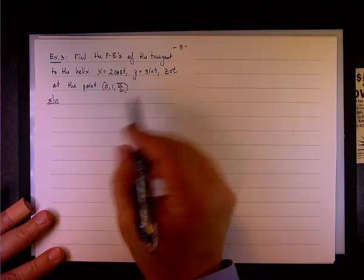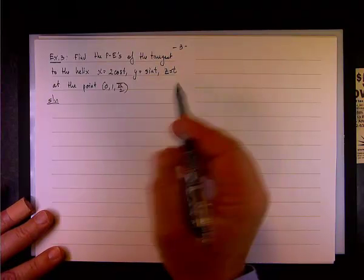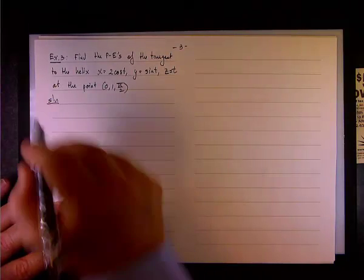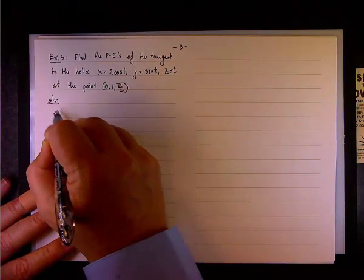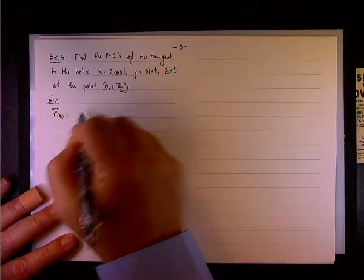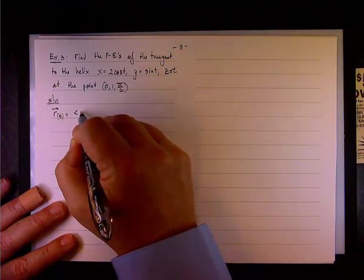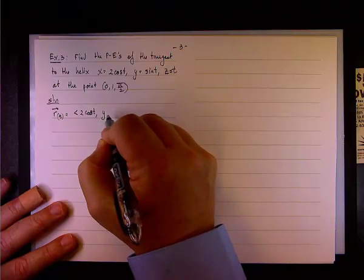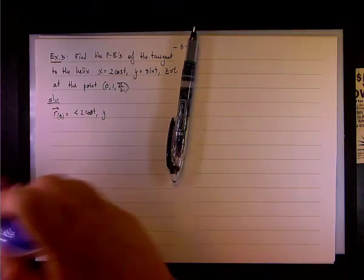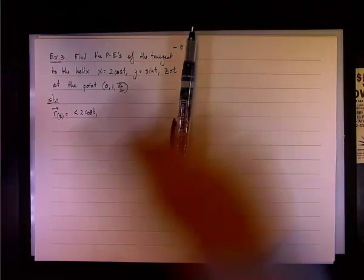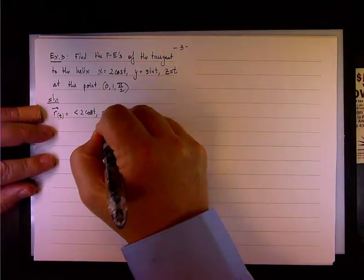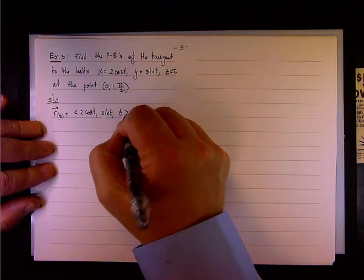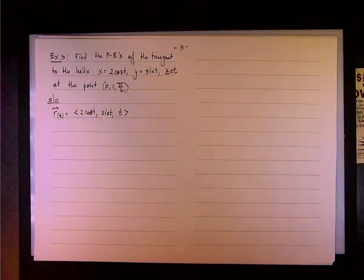And what we need to do is find the parametric equations of the tangent. So we start with the derivative of the position vector. Well, the position vector is just a little bit of redundancy here. It's 2 cosine t, sine t, and t, like so.